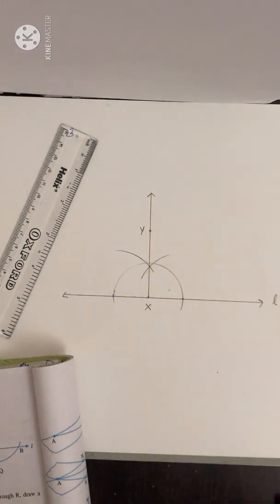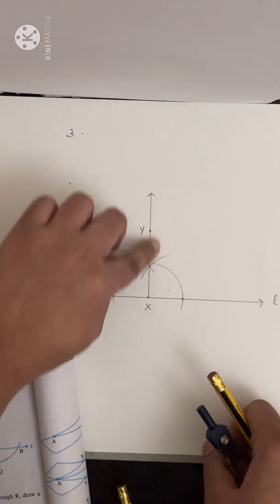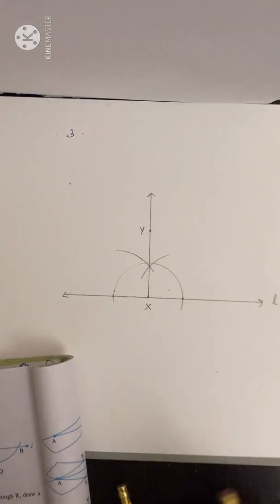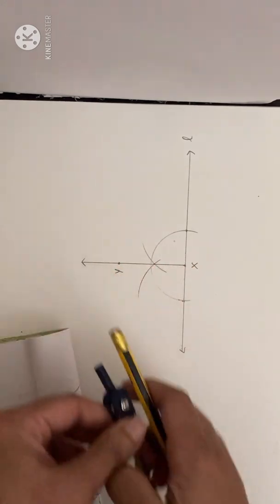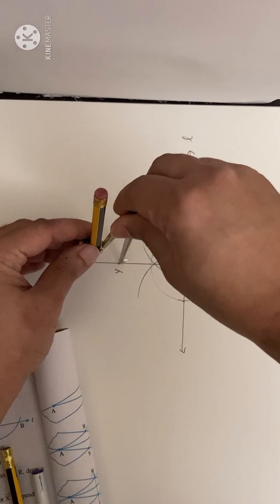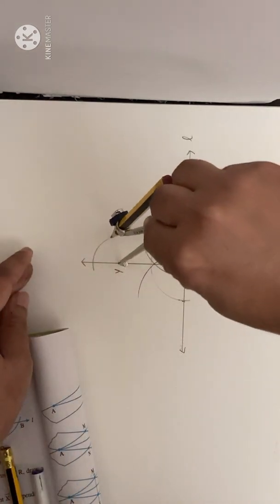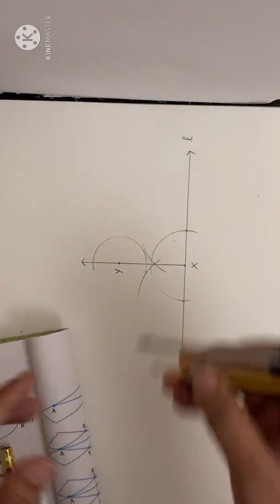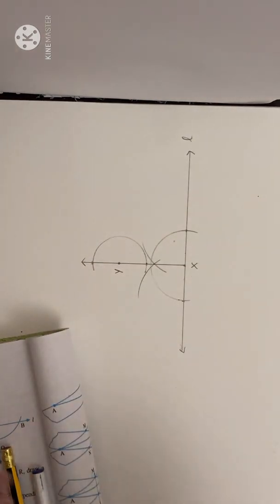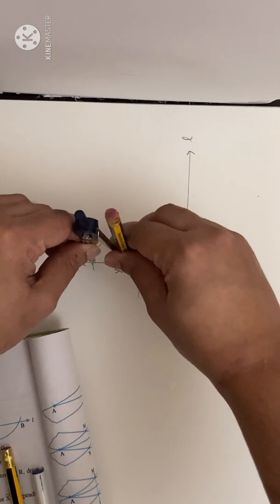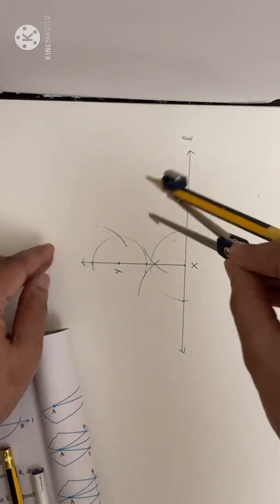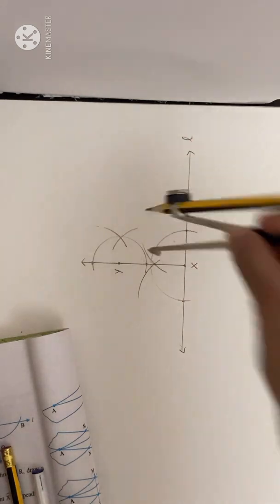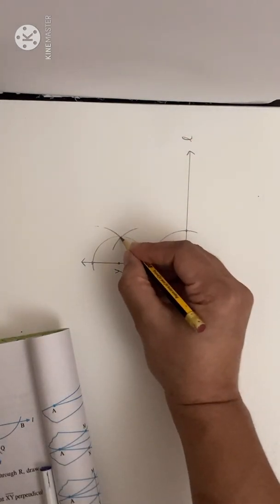XY is the line segment. Now draw a perpendicular to XY at point Y. Turn your book so XY becomes the base. With Y as center, draw an arc that cuts XY at two points. From the first point, take a radius greater than the distance to Y and draw an arc. From the other side, draw another arc.